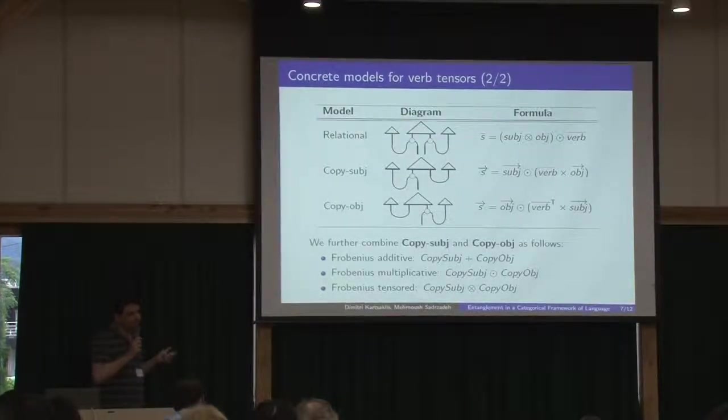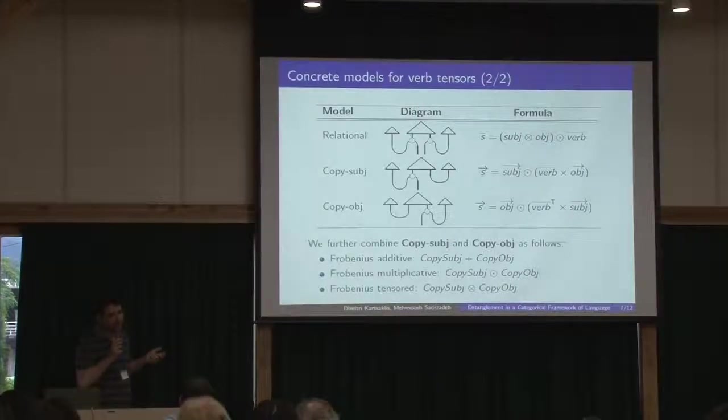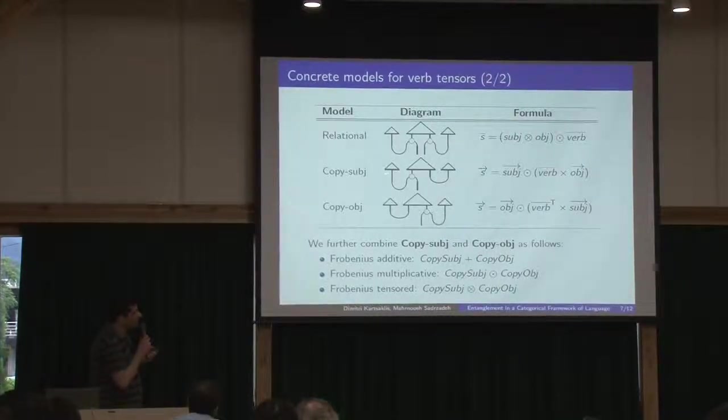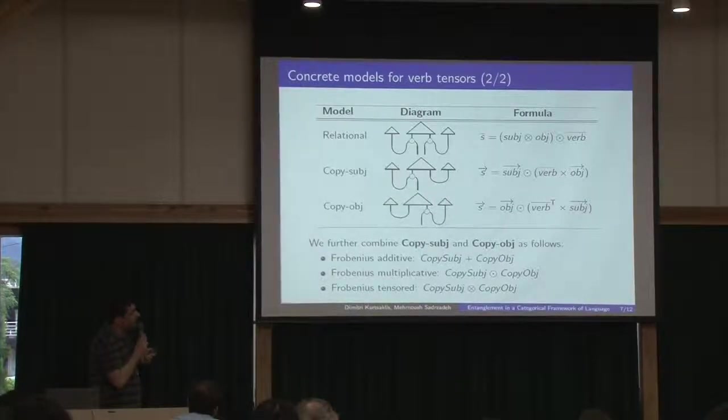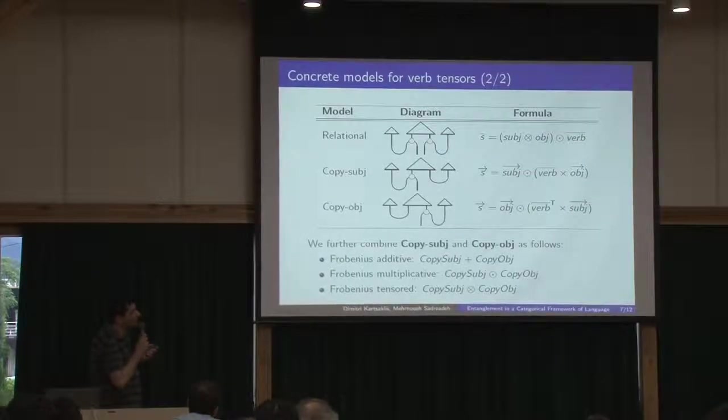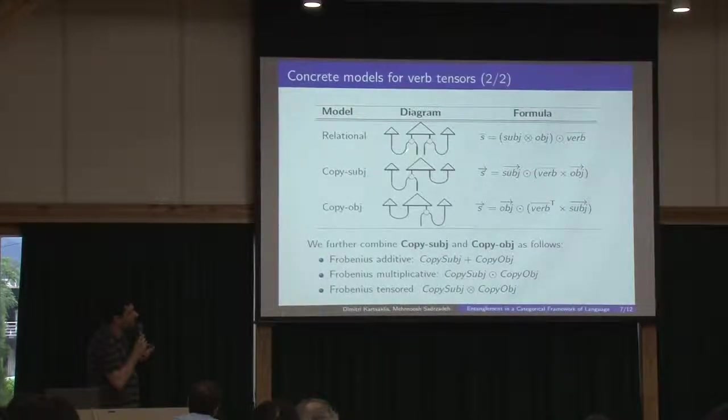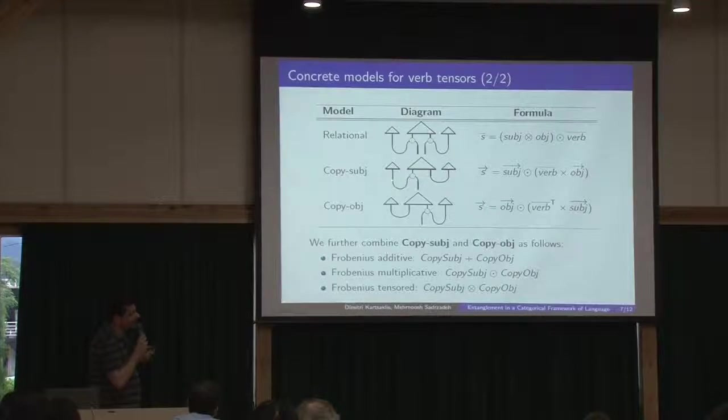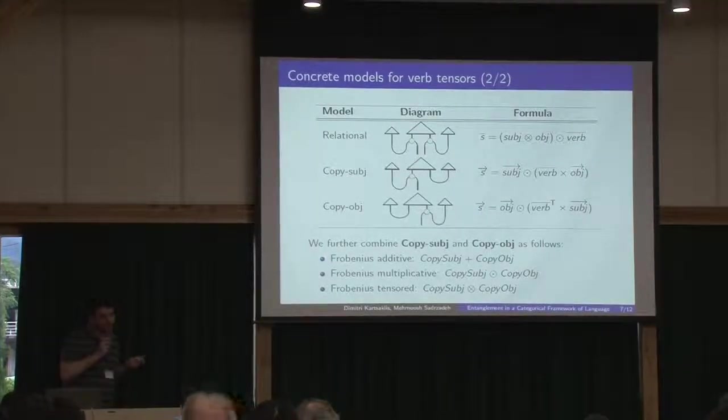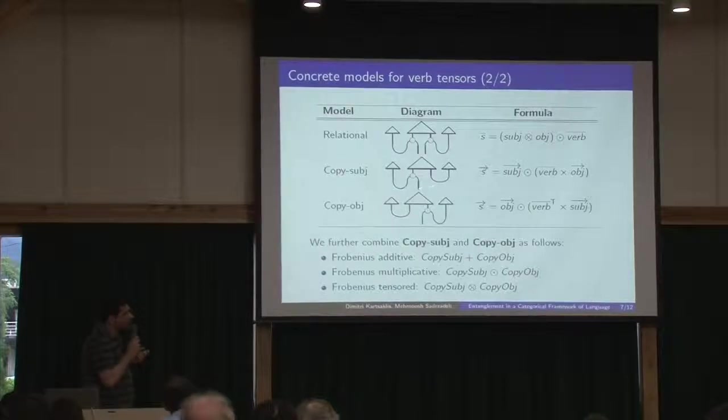Of course, here we have a matrix. We need to restore the functorial relation with the pregroup grammar. So in order to do that, we have these options here. One option would be to copy both dimensions like this, which means that the result of the computation would be a matrix. Our sentence here would be a matrix. A more convenient way to do that is to copy just one dimension.